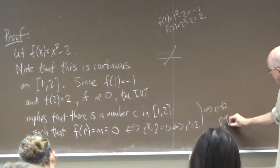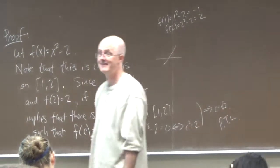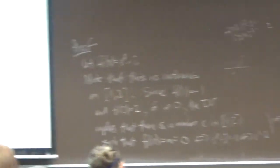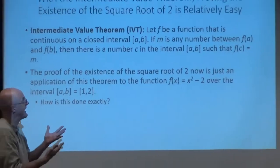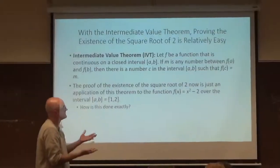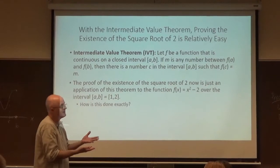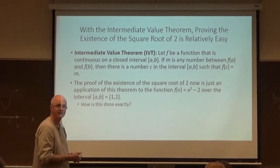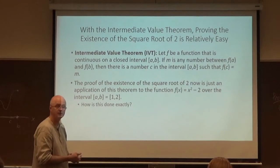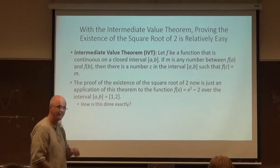Praise the Lord. We're done. That proves square root of two exists. I'm using this theorem. I have to verify the hypothesis of the theorem holds. f is continuous, and M is the number between f of a and f of b. I choose a and b in a convenient way to guarantee the conclusion that f of c is zero, so c squared is two, so c must be square root of two.